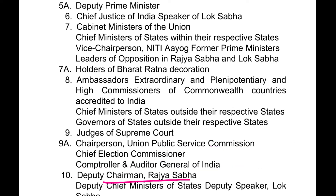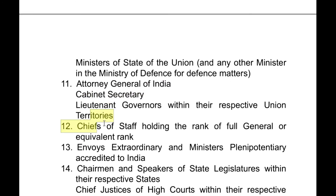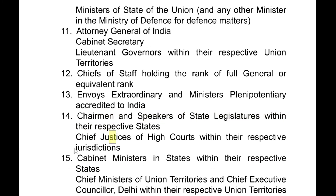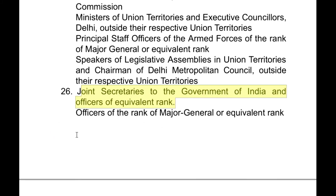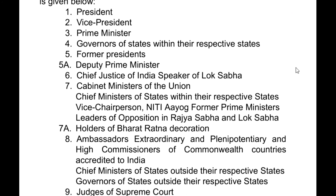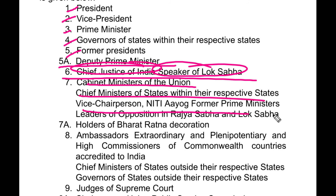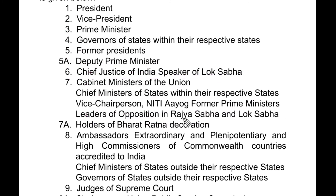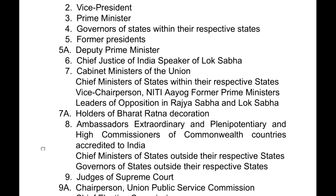Then the deputy chairman of Rajya Sabha, deputy chief minister, and deputy speaker of Lok Sabha, and members of NITI Aayog — these are in the 10th number. Then the attorney general, cabinet secretary. So the top ten are enough for us to remember. To summarize the top ranks: president, vice president, prime minister, governor, former president, deputy prime minister, Chief Justice of India and Speaker of Lok Sabha at the same level, then cabinet ministers, chief ministers of states within their respective states, vice chairperson of NITI Aayog, leader of Rajya Sabha, and leader of the opposition.